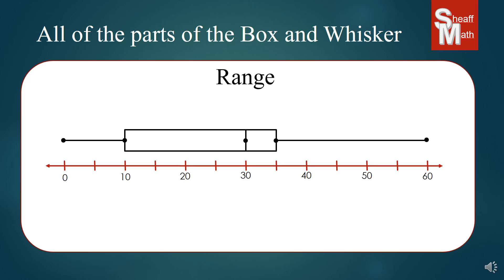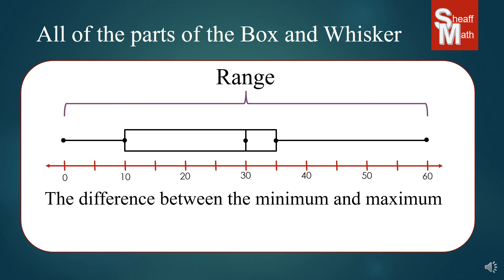The first one is the range. The range of a set of data is the difference between the minimum and the maximum. You subtract the lower one from the higher one. So the age range in our study was 60 years, from zero to 60 who played that game. We just subtract 60 minus zero.